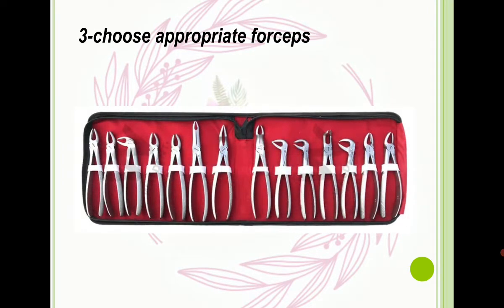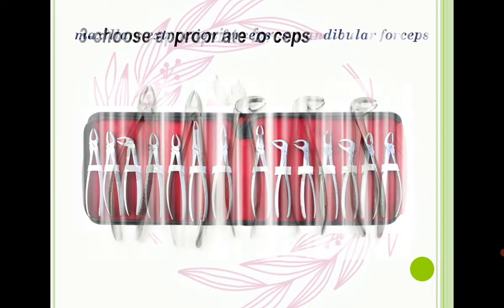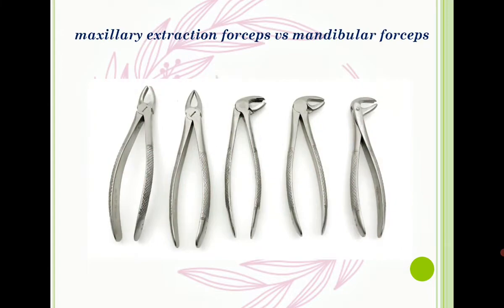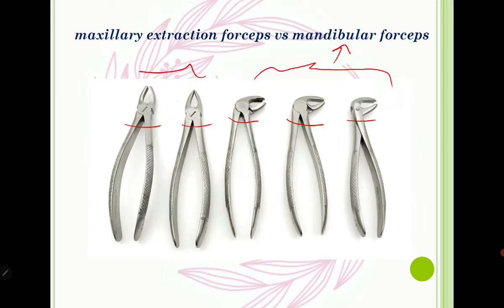After luxating with a straight elevator we have to choose appropriate forceps. There are two types of forceps — if you look at this picture, some of them have an angle and some of them are straight with no angle. If there is an angle in the structure of the forceps, they belong to mandibular forceps. If they are straight with no angle, they belong to maxillary forceps.